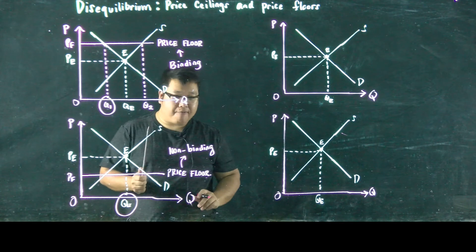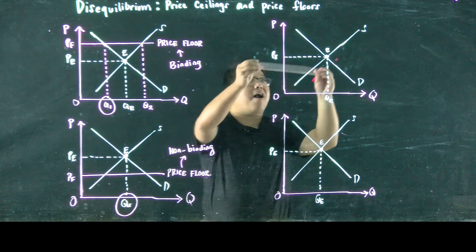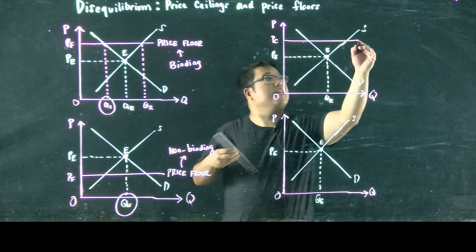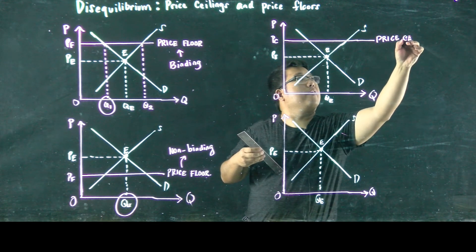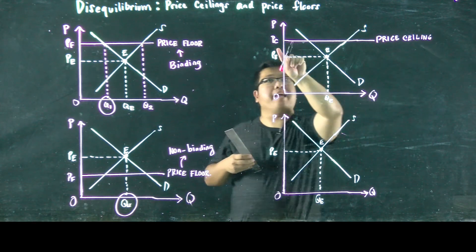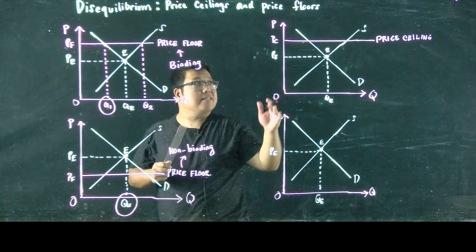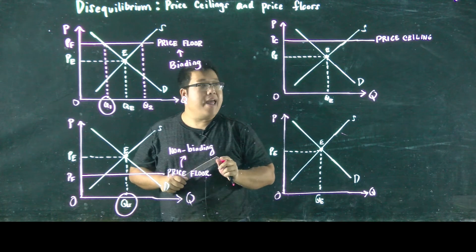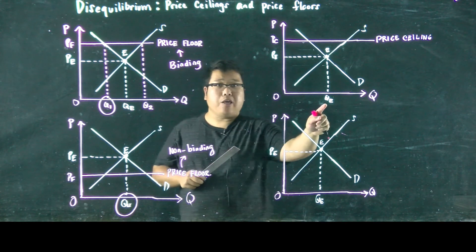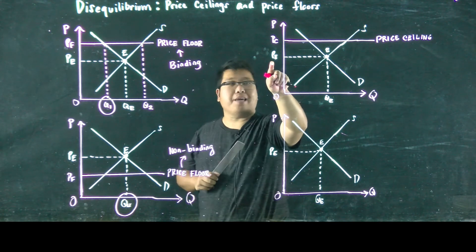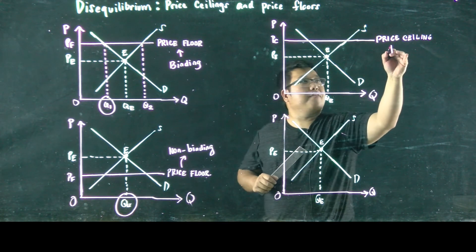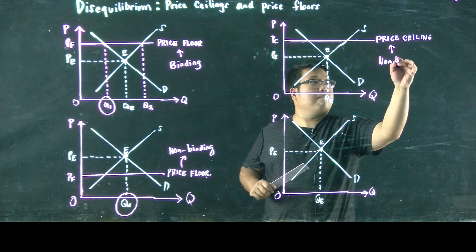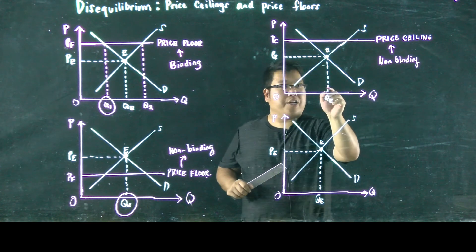Now let's look at the case where we have price ceilings. A price ceiling at PC is the highest price that sellers can charge in this market — you cannot go beyond PC. If the price ceiling is set above PE, then the actual quantity exchanged would be QE, because it is still allowed to charge PE in this market. We can conclude that this price ceiling set above PE is non-binding, and the quantity exchanged is QE.